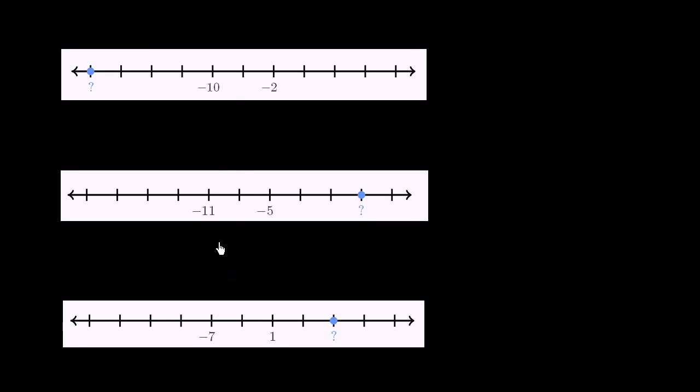We have three different number lines here. And on each number line, they mark off a couple of these marks. This is negative 2, this is negative 10, negative 5, negative 11. And then we need to figure out what the blue dot represents.